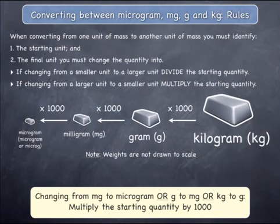In these last three examples, a quantity has been changed from a larger unit into a smaller unit. The information in the yellow box summarizes the rule that was applied.